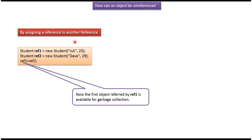Here we can see how to assign one reference to another reference. I have created a student object referred to by ref1, and another student object referred to by ref2. I am assigning ref2 to ref1, so both ref1 and ref2 point to the second student object, making the first student object eligible for garbage collection.